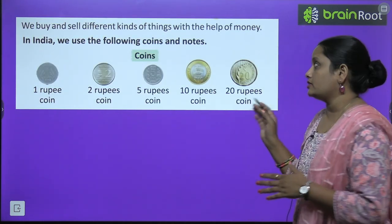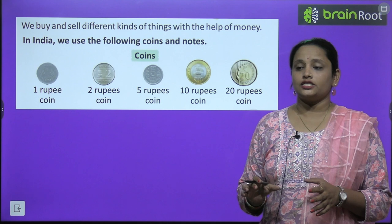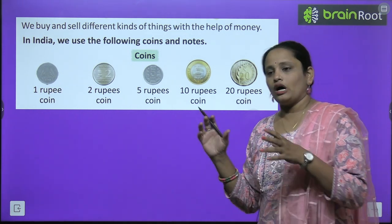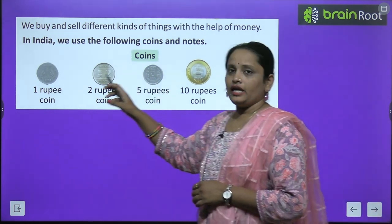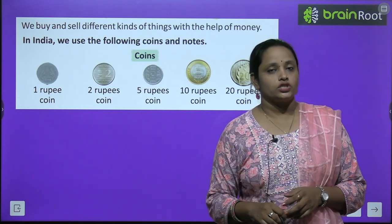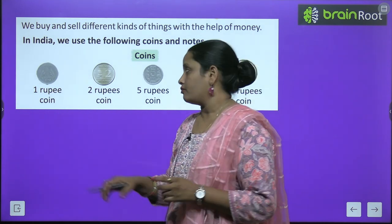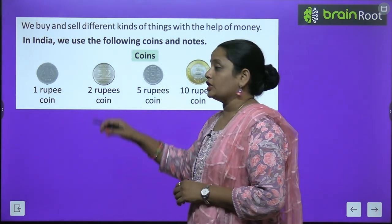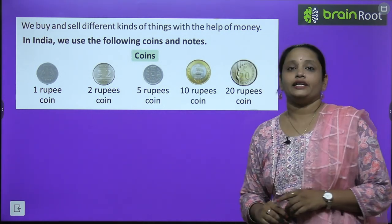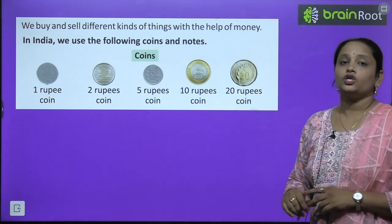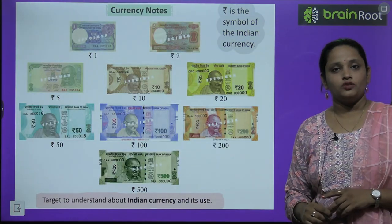We buy and sell different kinds of things with the help of money. हम बहुत सारी चीज़ें खरीदते हैं — कुछ भी खरीदना हो तो उसके लिए मनी चाहिए. तो हम मनी से चीज़ों को खरीदते हैं और बेचते हैं. In India, we use the following coins and notes. तो यहाँ इंडिया में coins means सिक्के — पहला है 1 रूपी का coin, फिर 2 रूपी का coin, next है 5 रूपी coin, फिर 10 रूपी coin और 20 रूपी coin. यह सारे coins हम यूज़ करते हैं.